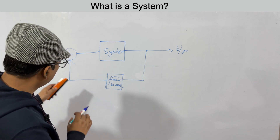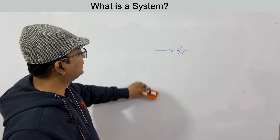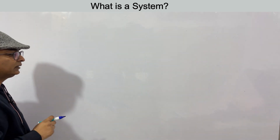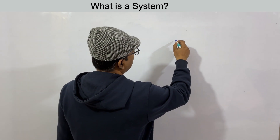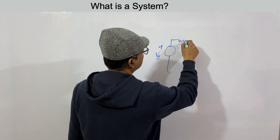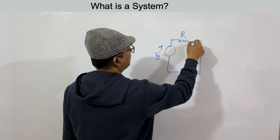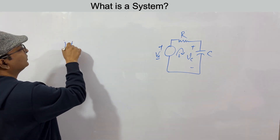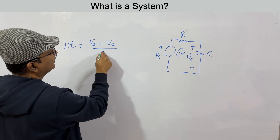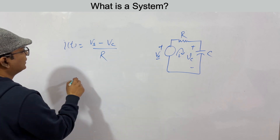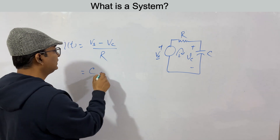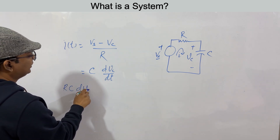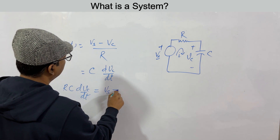Before discussing system properties, let's look at a simple example. Consider a circuit with a voltage source Vs, a resistor R, and a capacitor C. The current i equals (Vs − Vc) / R, and since it's a capacitor, i = C·dVc/dt. Substituting gives: RC·dVc/dt = Vs − Vc.